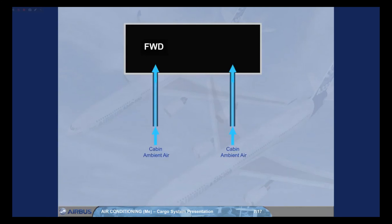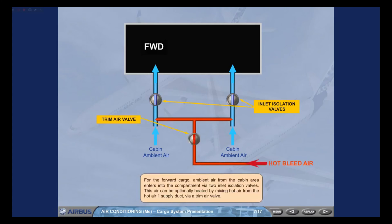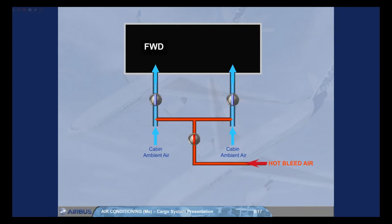For the forward cargo, ambient air from the cabin area enters into the compartment via two inlet isolation valves. This air can be optionally heated by mixing hot air from the hot air one supply duct via a trim air valve. Also, this air can be optionally mixed with cold air from PAC-2 via a cold air valve. If the cooling is operated below 20,000 feet, the PAC-2 outlet temperature is limited to 5 degrees Celsius to avoid ice accretion on the cold air valve.